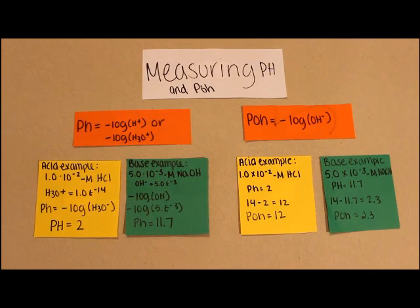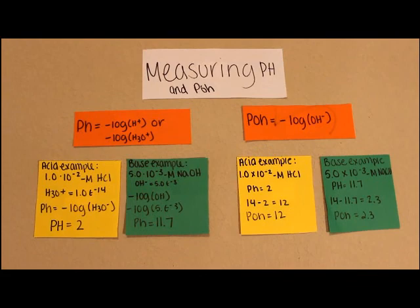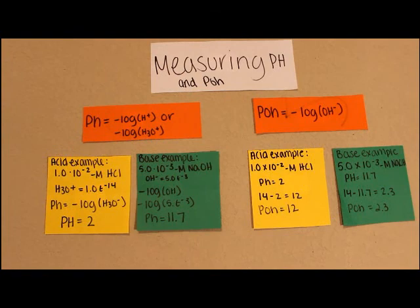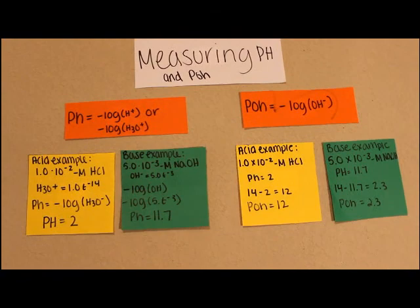Measuring pH and pOH. The formula for pH is negative log of H+ or negative log of H3O+. To find pOH, use negative log of OH-.